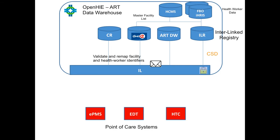If we also have the master facility list for Namibia, that information will be represented in DHIS2. At this point, with the click of a button, we can pull the facility information from DHIS2 into the interlinked registry. So now we have a way to validate both the health worker and the health facility at which that clinical content was captured.